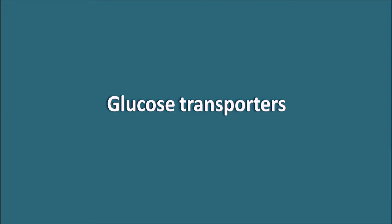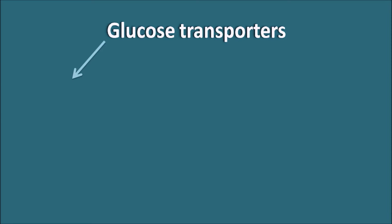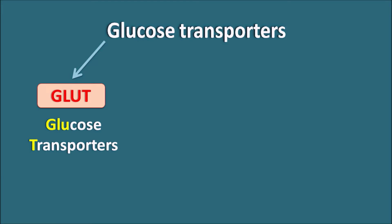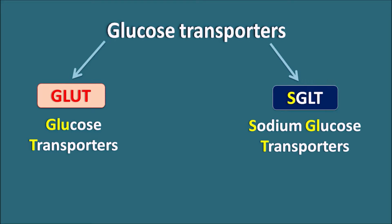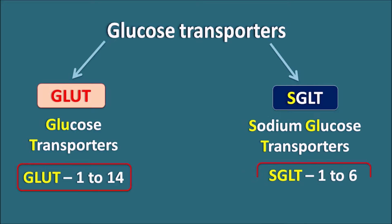Glucose transporters can be classified into two types. The first is GLUT — glucose transporters — where GLU indicates glucose and T indicates transporter. The second type is SGLT, where S indicates sodium, so these are sodium-glucose transporters. We have different types: GLUT1 to GLUT14, and SGLT1 to SGLT6. Let us now see the role of these transporters in absorption and distribution of glucose in the body.